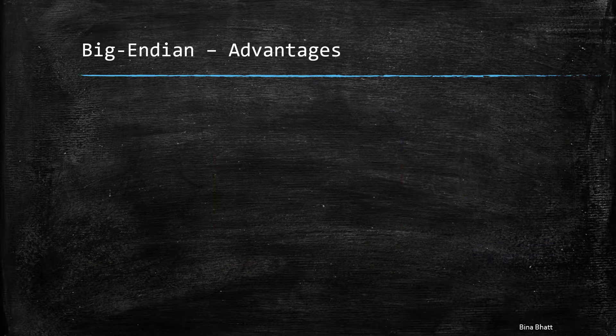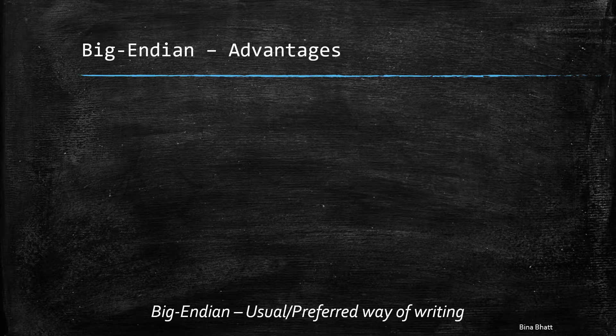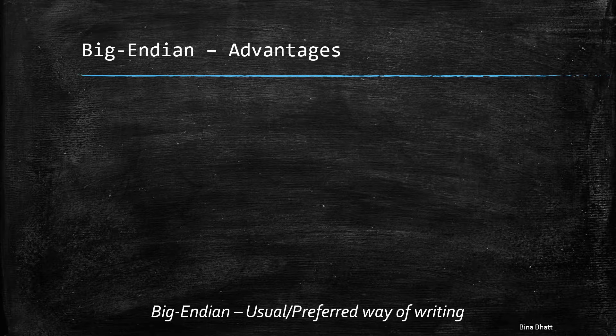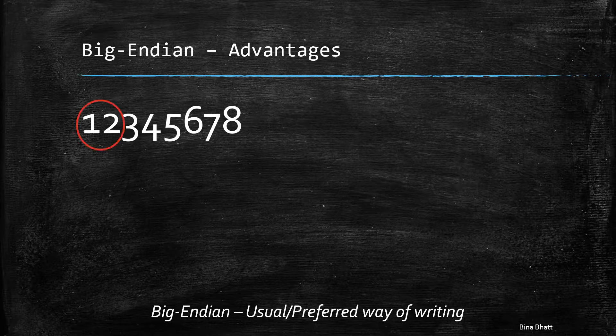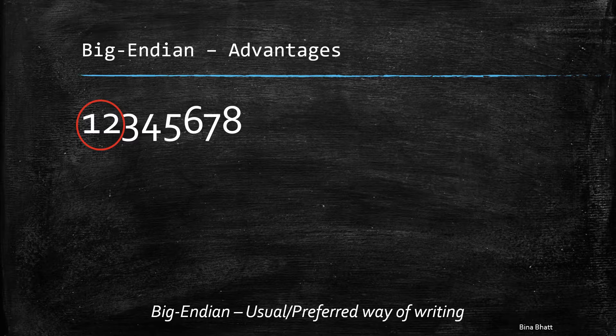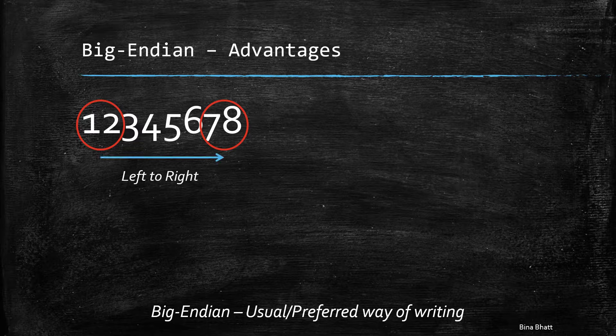Alright, coming back to this one. One of the most obvious advantages of big endian is that it is also the natural way in which we write things. We write the MSB of any given number first on the left hand side and LSB in the end on the right hand side.